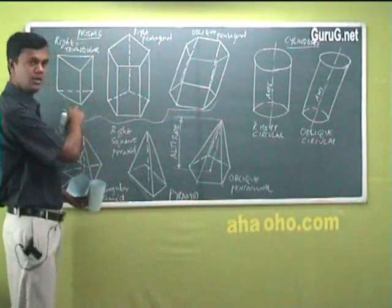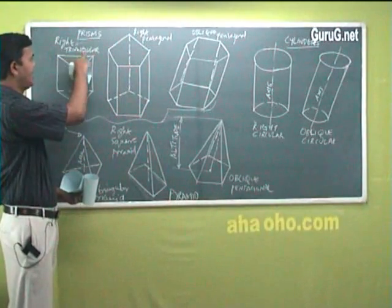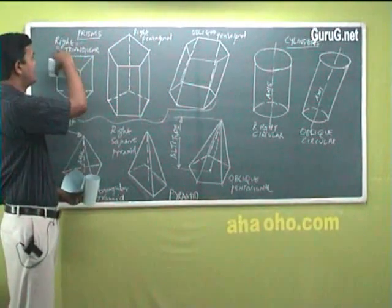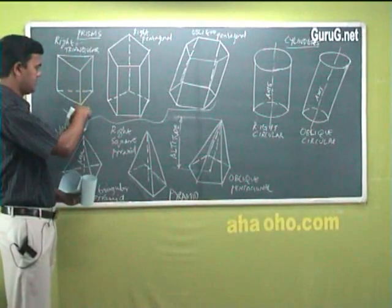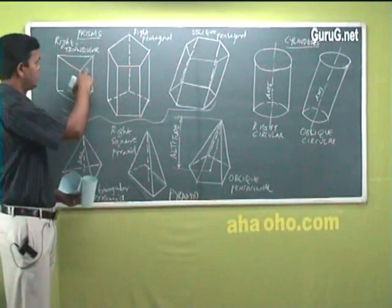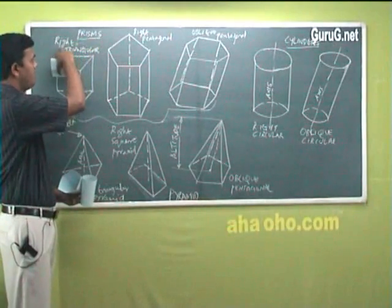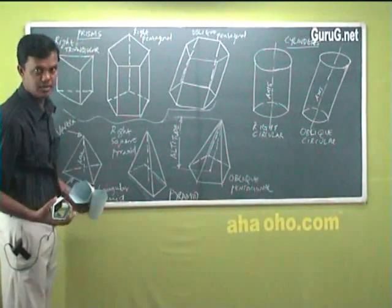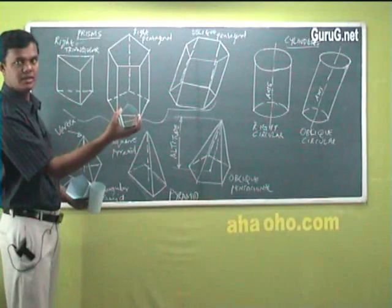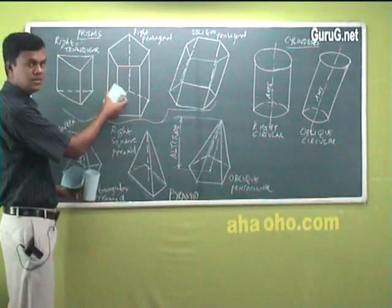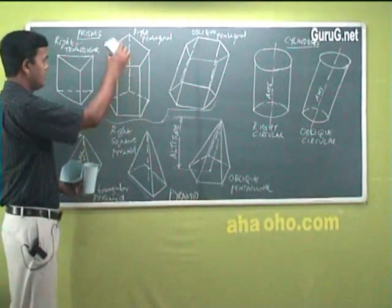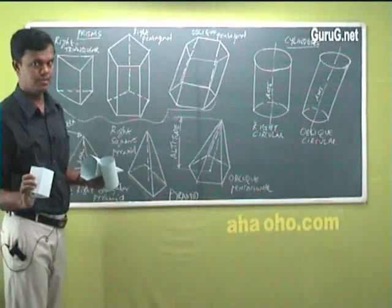For example, you see this sketch—what is this shape? It is a triangular shape. Why is it called right triangular? Because the triangle is resting on the base. So right triangular prism. Like this, what will this be then? Right pentagonal prism. The prism means simply understand the top and base will be the same shape.